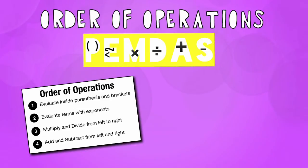Next we get to the E. The E is our exponents. The exponents, any exponent should be done after parentheses.